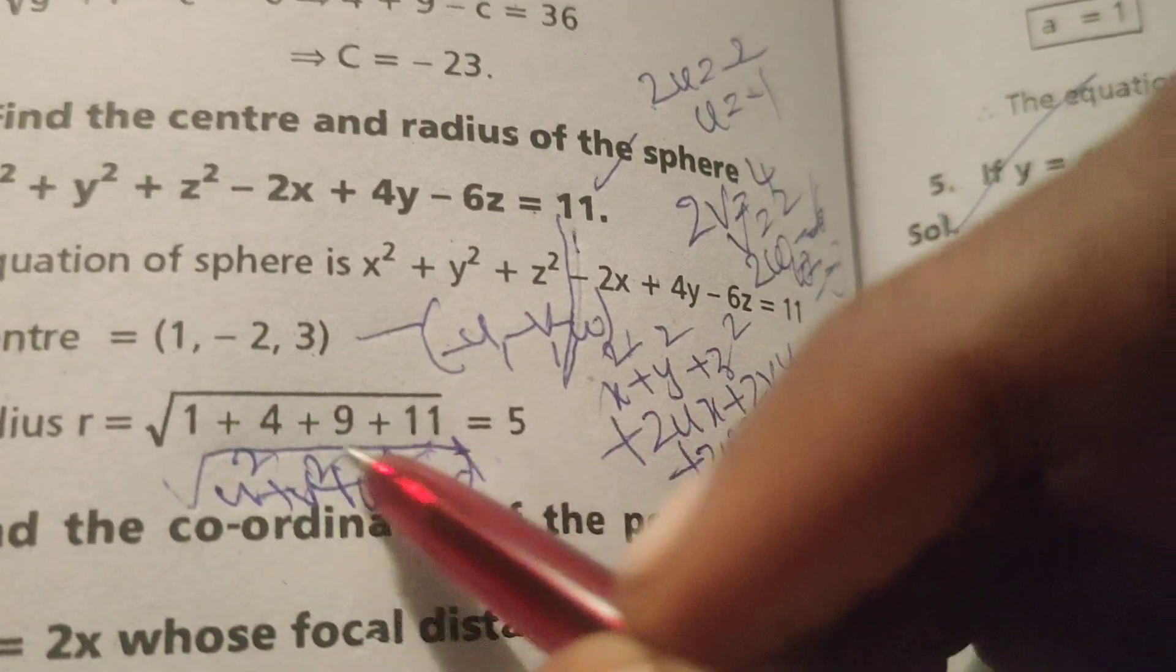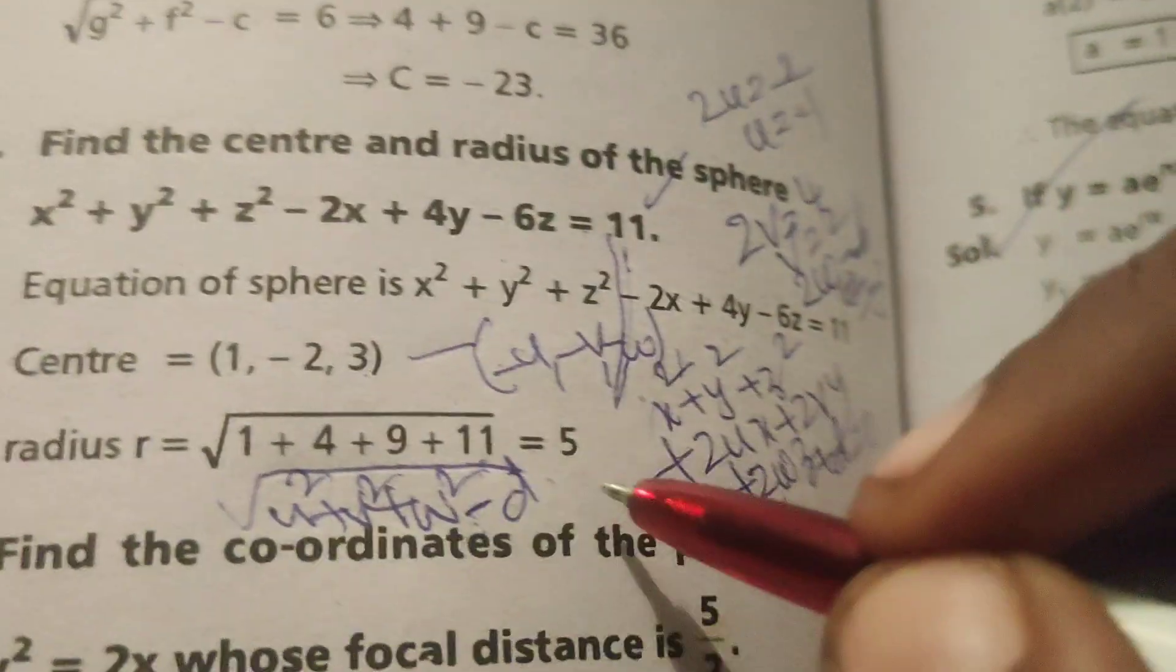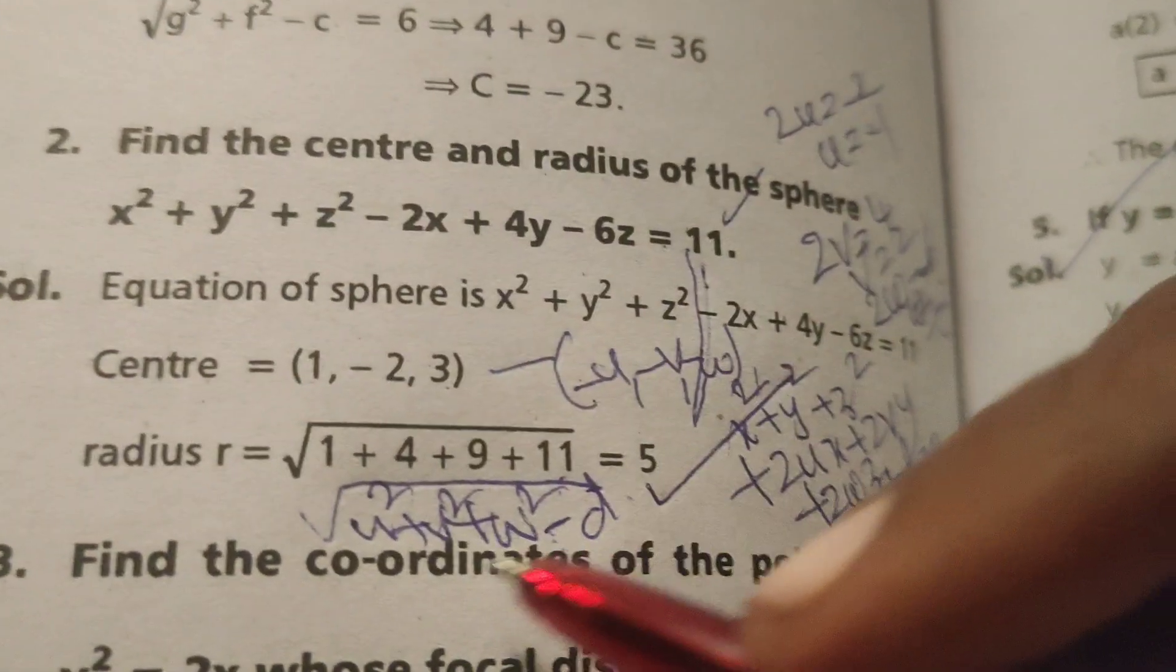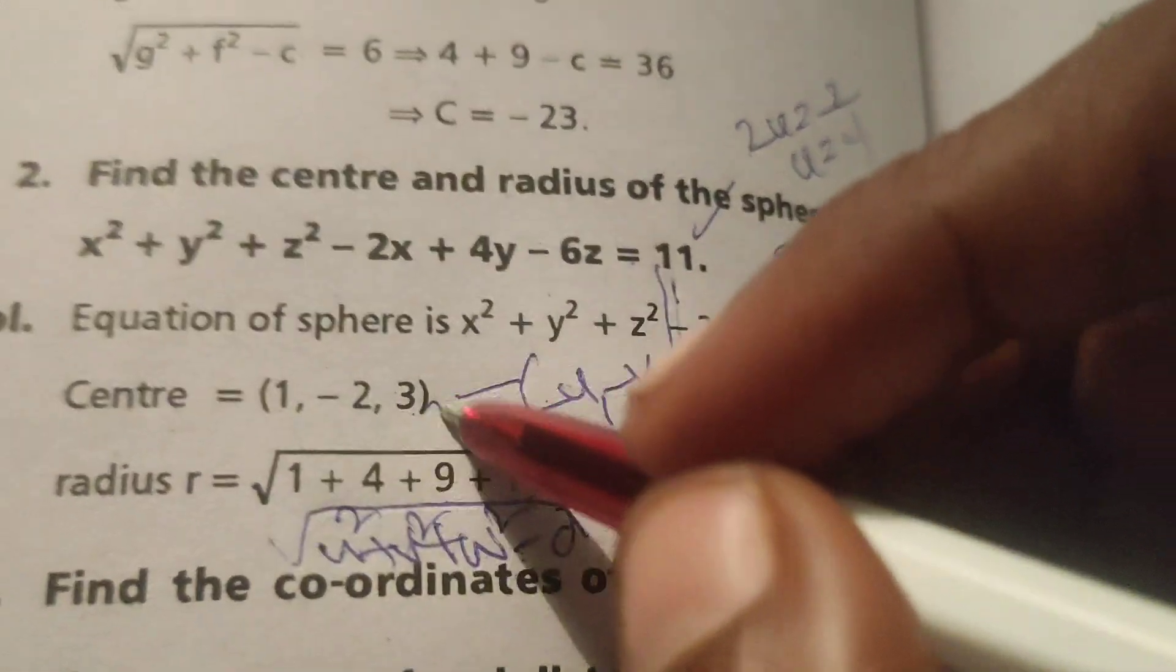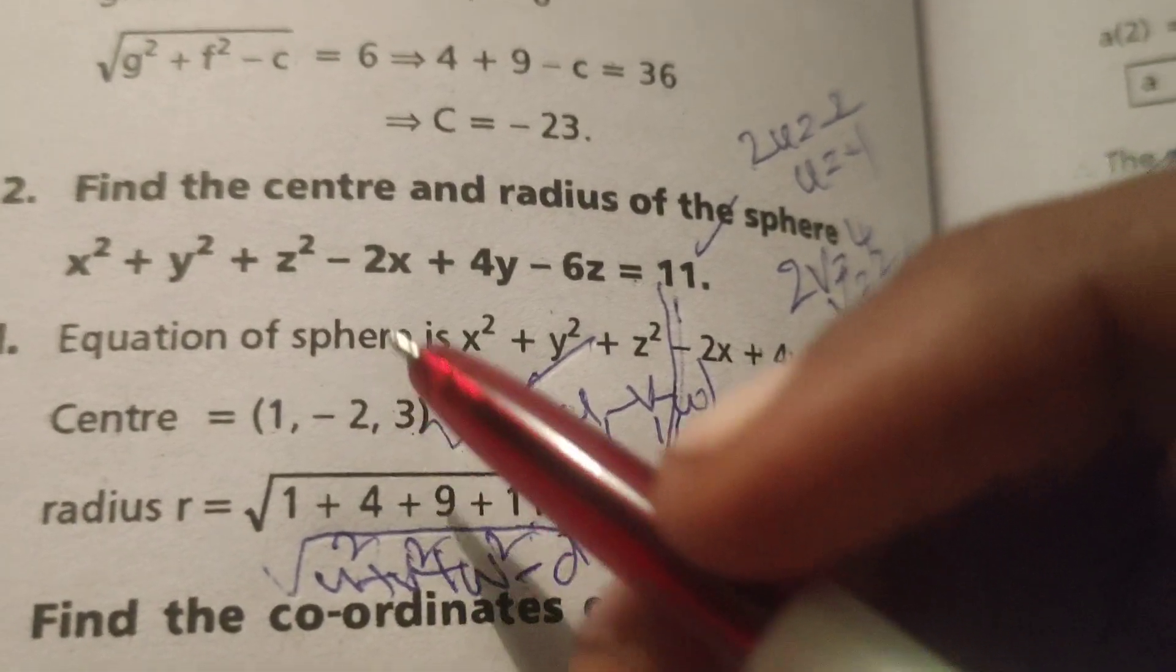This is 20, 24, plus 1, 25. Root of 25 means 5, radius means 5, center means 1, comma, minus 2, comma, 3.